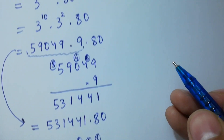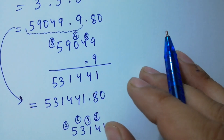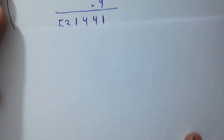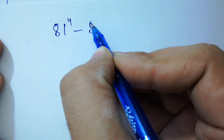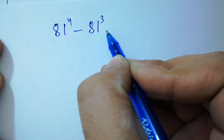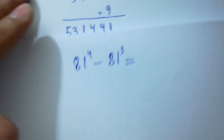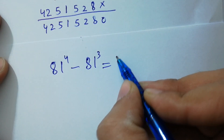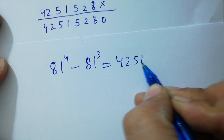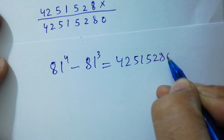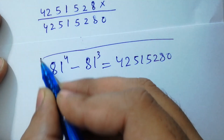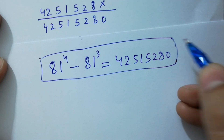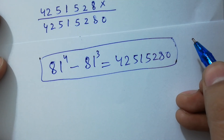So finally, 81 to the power 4 minus 81 to the power cube equals 42,515,280. Which is our final answer without using any calculator.